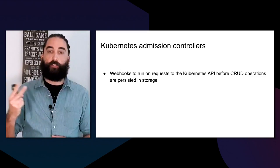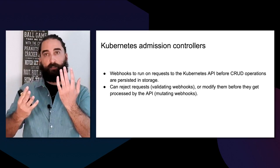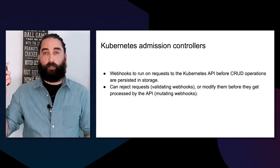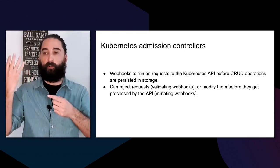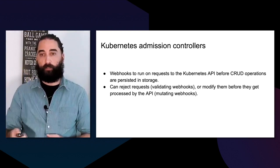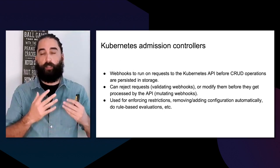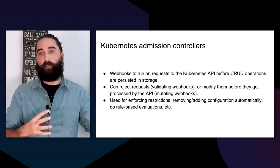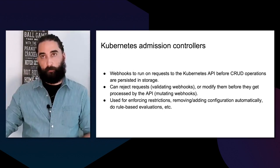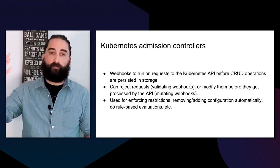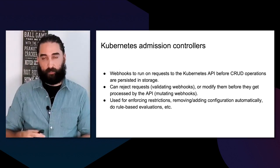The other key aspect is admission controllers — essentially webhooks that intercept calls to the Kubernetes API, whether from humans running kubectl apply or machines like Jenkins or Spinnaker. There are two types: validating webhooks, which inspect the payload and either reject or pass the request; and mutating webhooks, which inspect and can modify the payload before it's persisted in etcd. Validating webhooks enforce rules beyond RBAC, and mutating webhooks can sanitize input or inject things known at runtime but not previously defined.